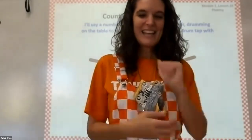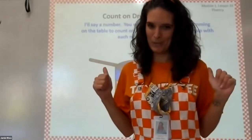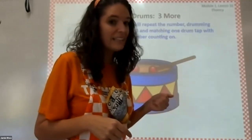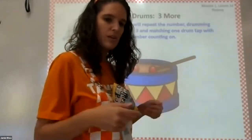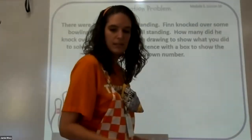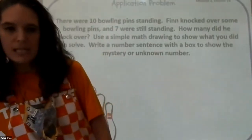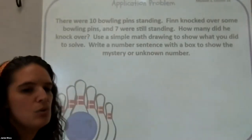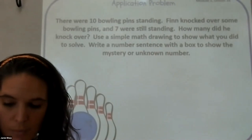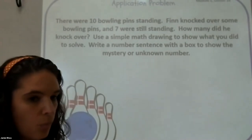Now you need your whiteboard and a piece of paper and something to write with so we can do our application problem. Don't put the detective hat away yet because we still have to solve the application problem. Remember, we have to find the information we need. Make sure you have your board ready — if you need to pause to go get it, do that. I'm going to move out of our way and read our application problem. We need to listen for important information and discover what it wants us to do.